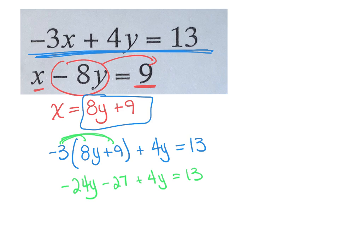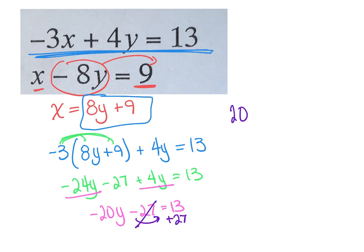Combine my like terms: negative 24 and 4. I'm going to move my 27 over — add 27 to both sides. I'll get negative 20y equals 40. Then to solve for y, divide by that negative 20. Remember, positive divided by negative — we're going to get y equals negative 2.